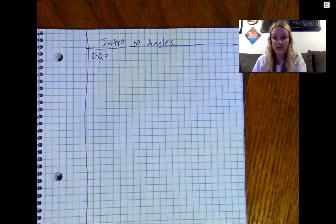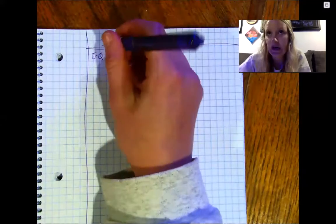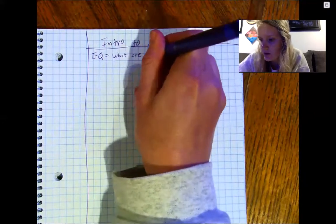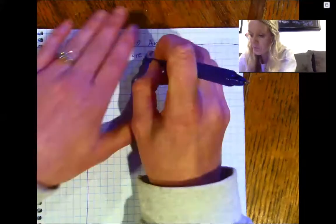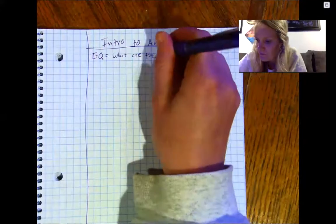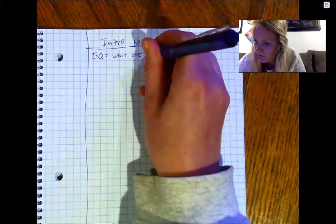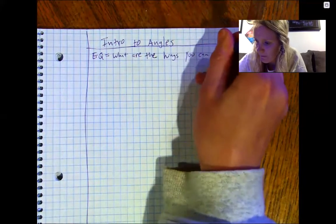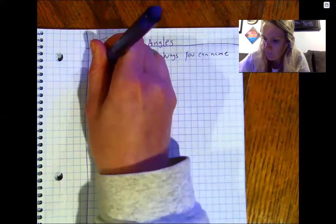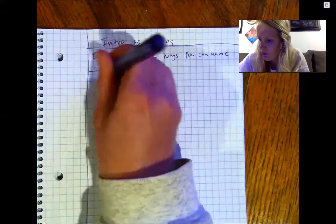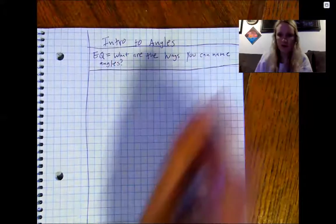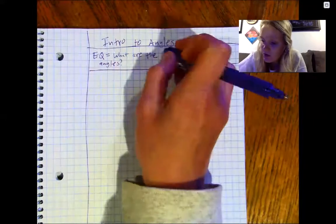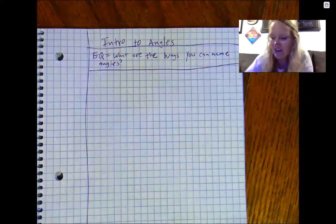Our EQ today is: what are the different ways you can name angles? There's more than three, that's why I wanted to erase 'one of the three ways.' So: what are the different ways you can name angles? Angles — not angels — angles.